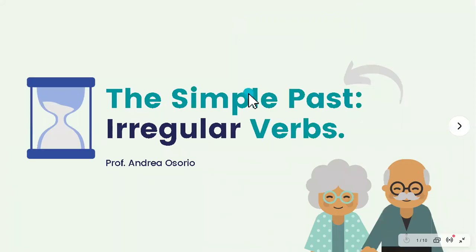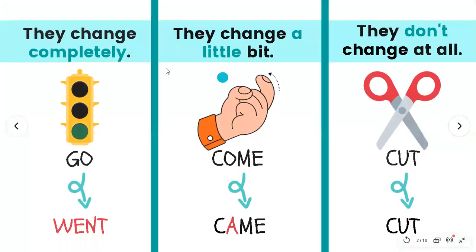Okay, so this is the last part of unit number two, and it is about irregular verbs, and we're going to see what this is about. So, let's start with this.